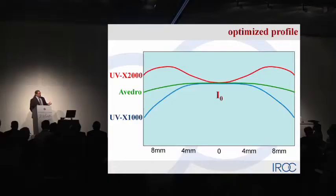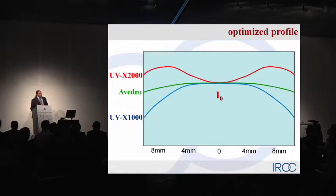How does this look? The initial cross-linking system we brought to market in 2007 had a pretty much Gaussian-like profile. We believe that adding more light intensity in the periphery — at about 8 mm and 6 mm in diameter — getting more cross-linking in the periphery over the thinnest point while keeping the same intensity in the center, will improve the outcomes. Compared to other systems which have more of a constant profile, we're doing about 25% to 30% more in the periphery with our cross-linking system.